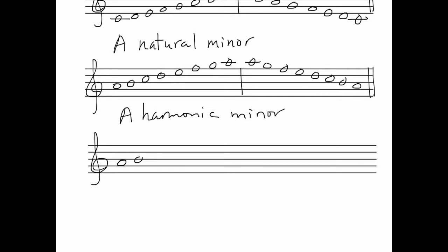So we'll have A, B, C, D, E, F, G sharp, A. And bar line, A, G sharp, F, E, D, C, B, A. Double bar line.